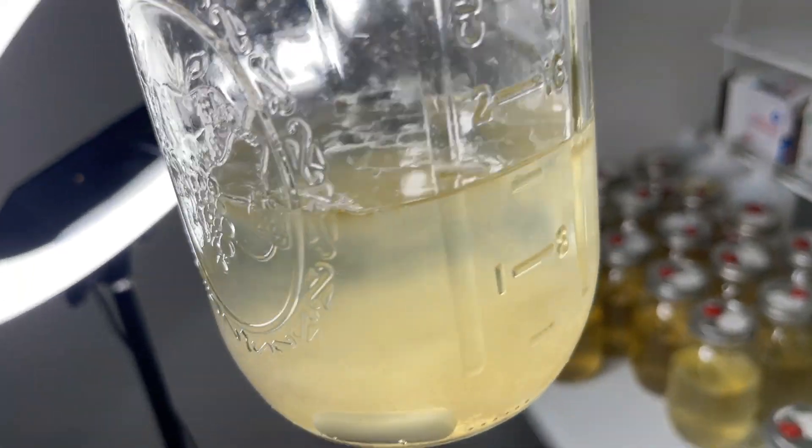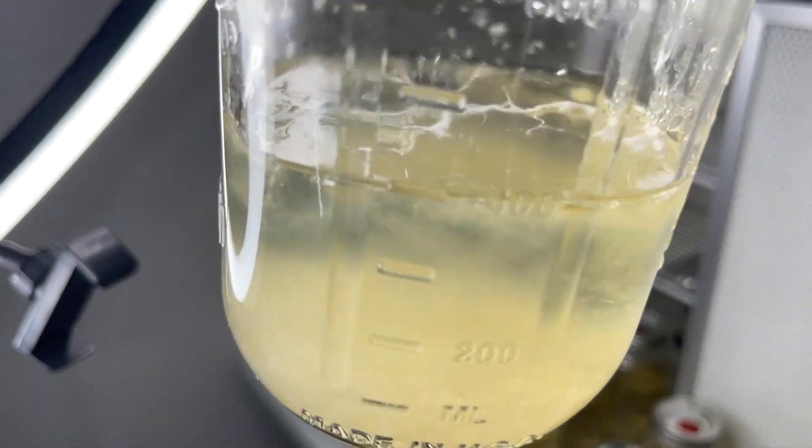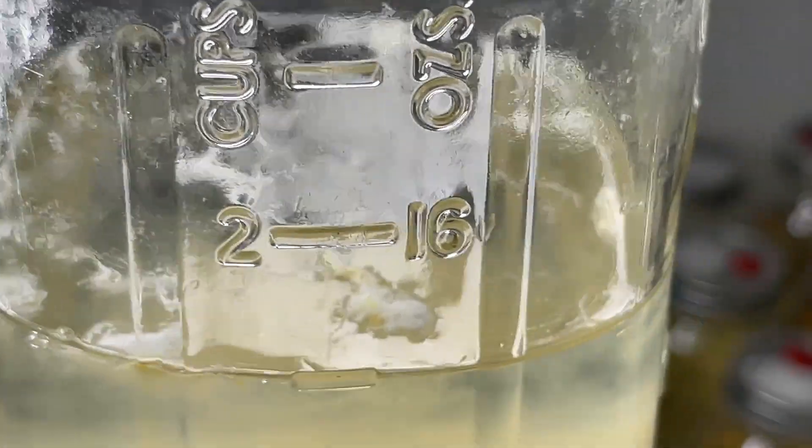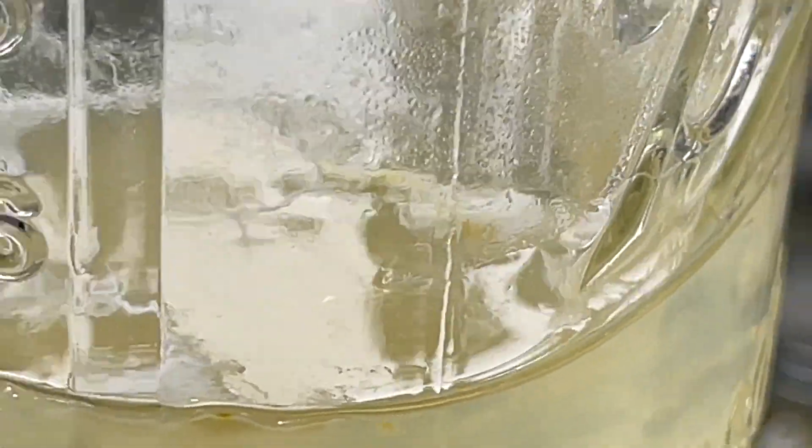Another species that can get pretty crazy on the surface is antler reishi. If you don't stir it, it will grow like a web of mycelium on the surface and start growing yellowish fruit bodies.